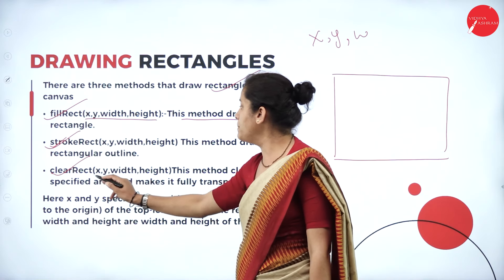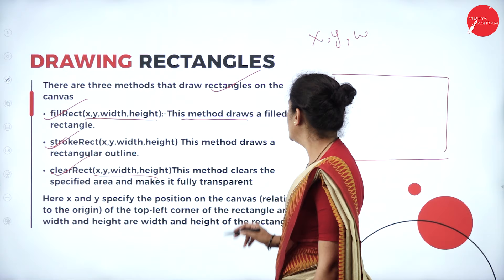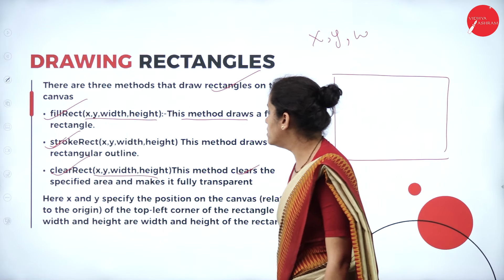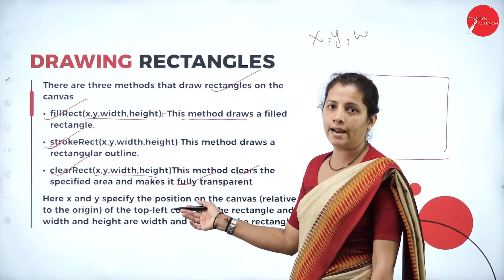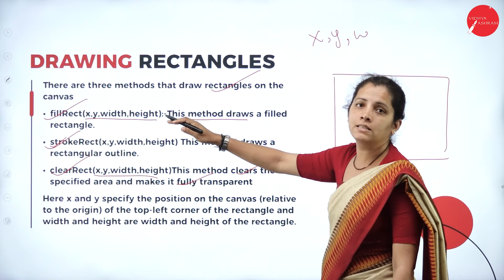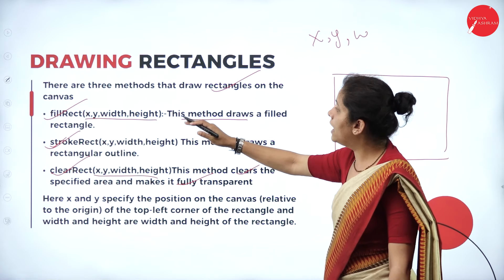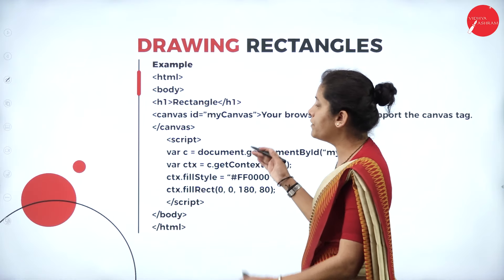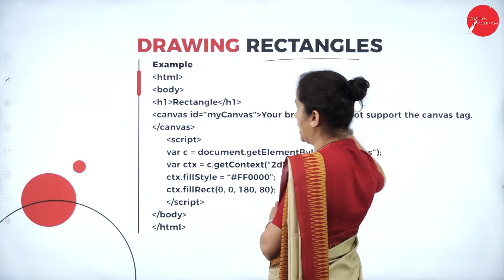Each of these three methods takes four parameters: the x coordinate, y coordinate, the width of the rectangle, and the height of the rectangle. Now I have a simple code example to draw the rectangle.